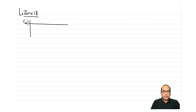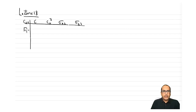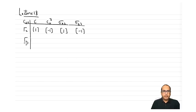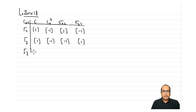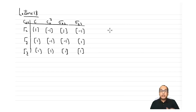For the C2v point group we have E, C2z, σxz, and σyz. Under these operations, τx gives characters: E→+1, C2z→−1 (since x goes to −x), σxz→+1, σyz→−1. For τy: E→+1, C2z→−1, σxz→−1, σyz→+1. For τz, all characters or matrix elements are +1.